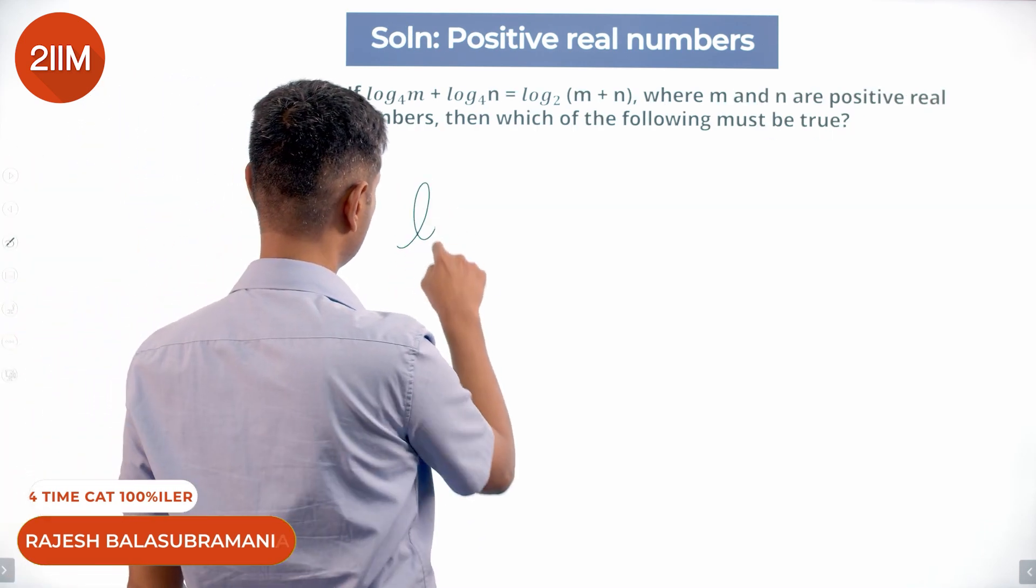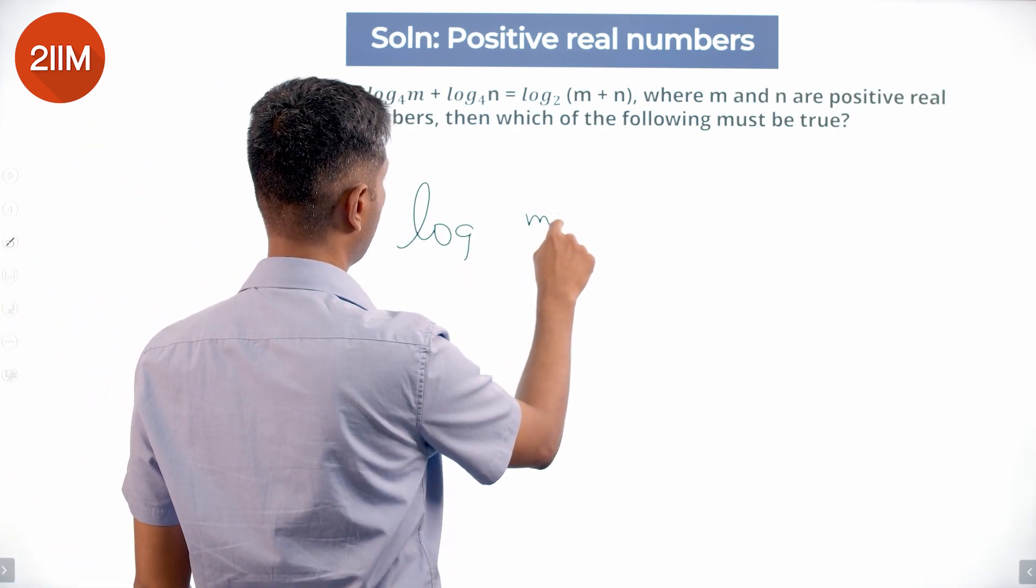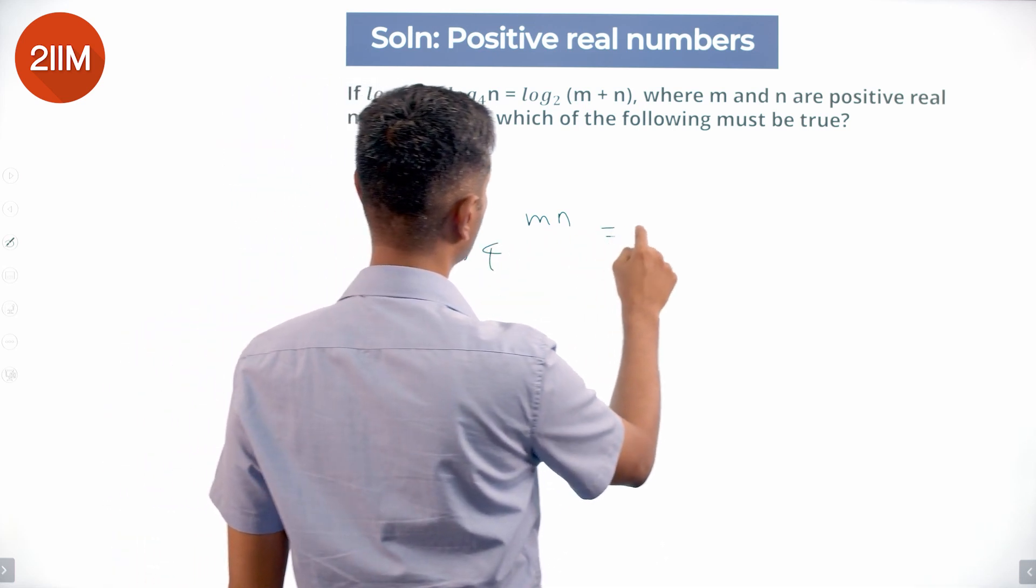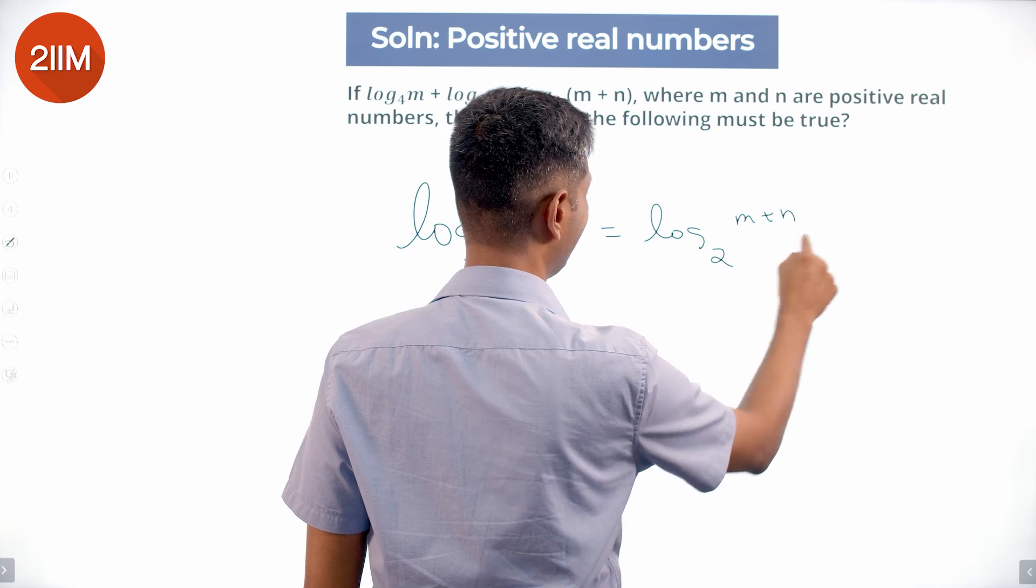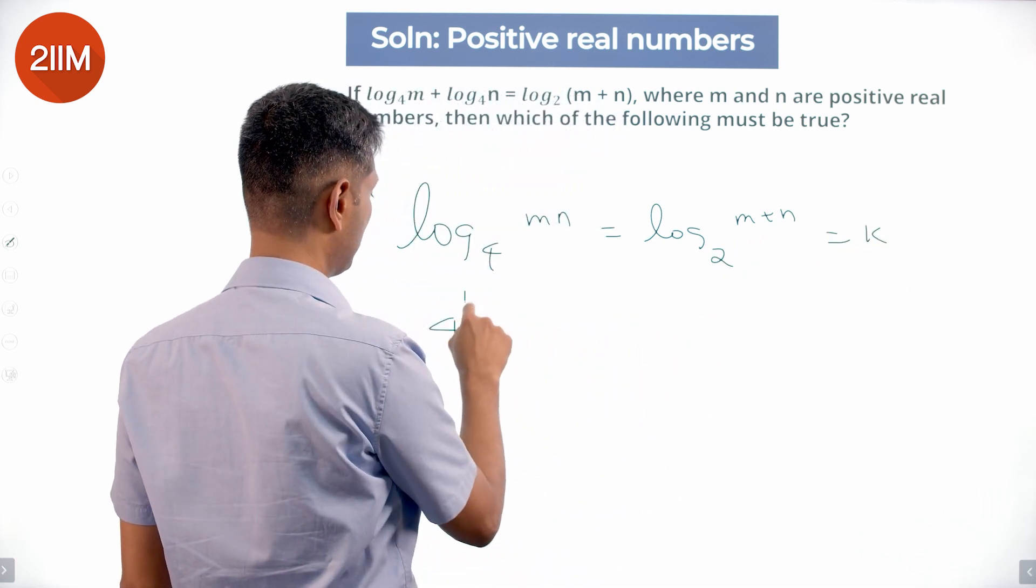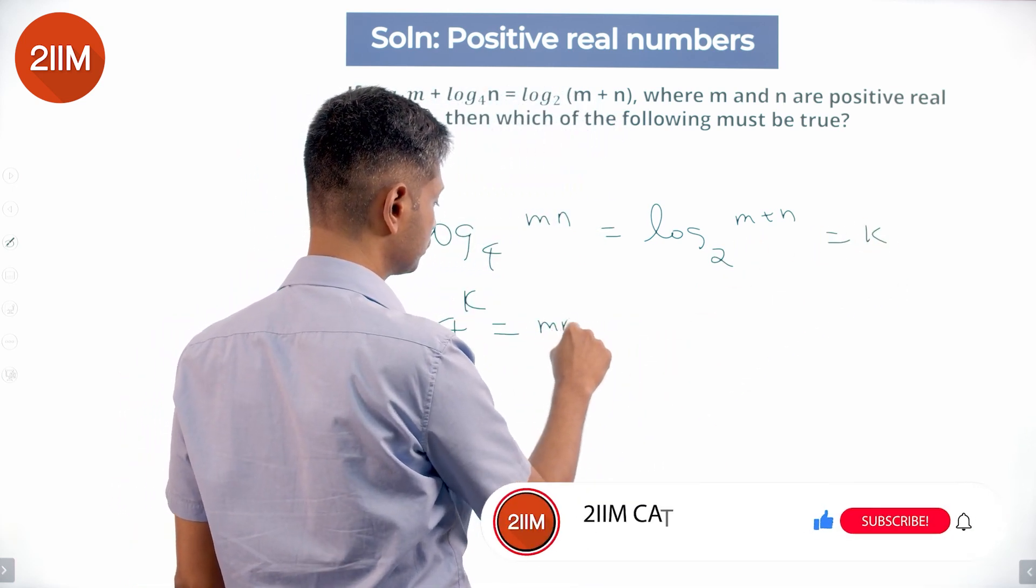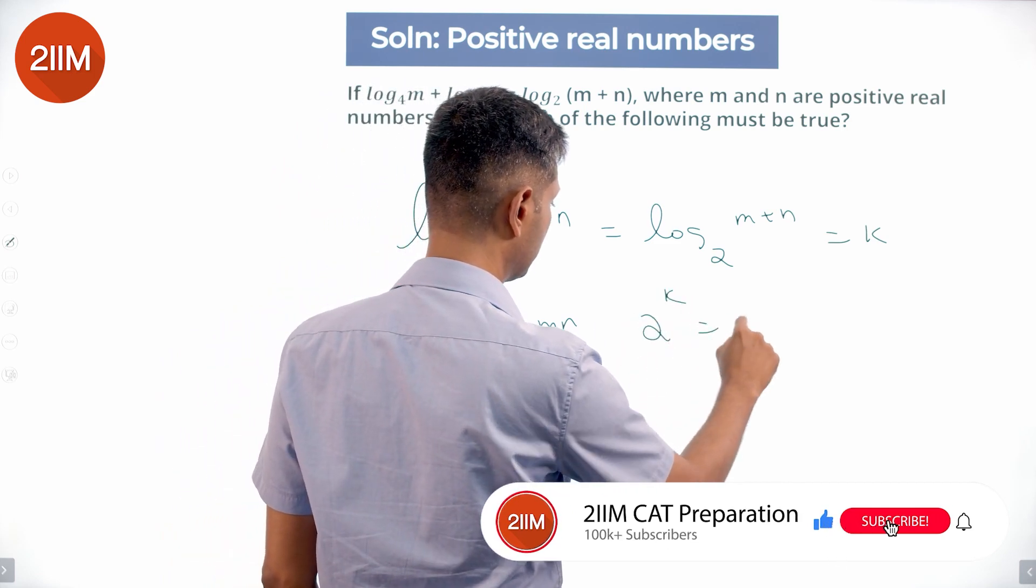Next question. So this is log mn to the base 4 equals log m plus n to the base 2. Let us say this is equal to k. So 4 to the power k equals mn, and 2 to the power k equals m plus n.